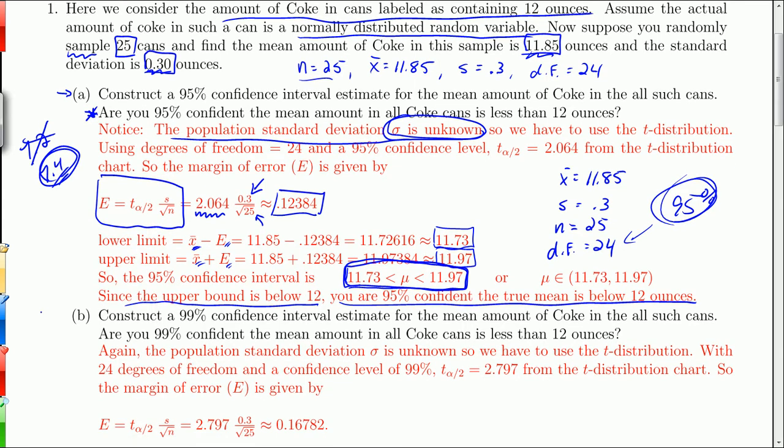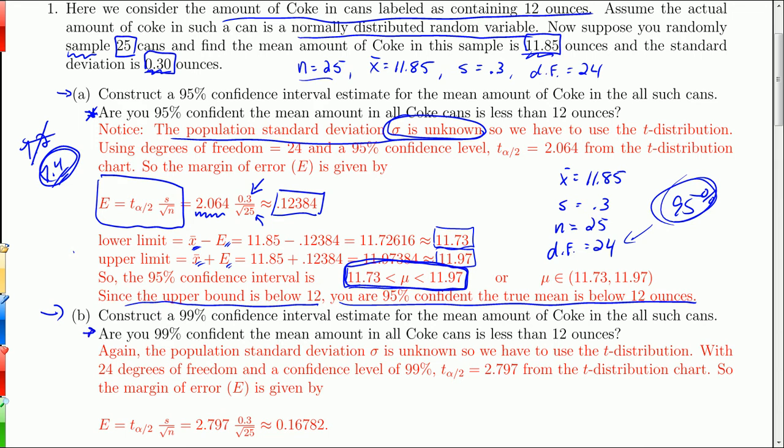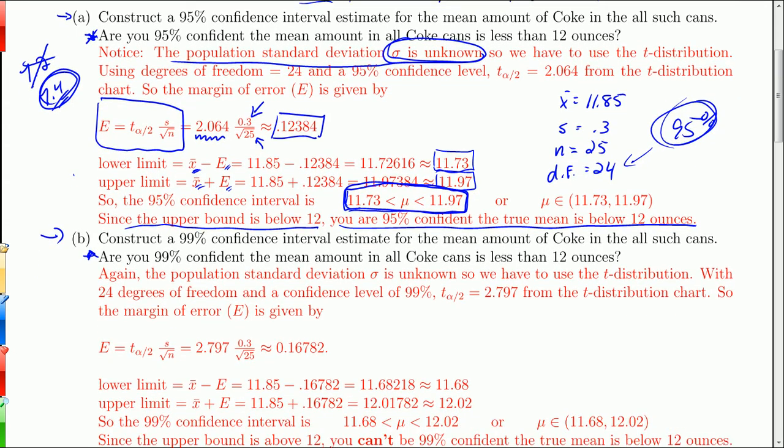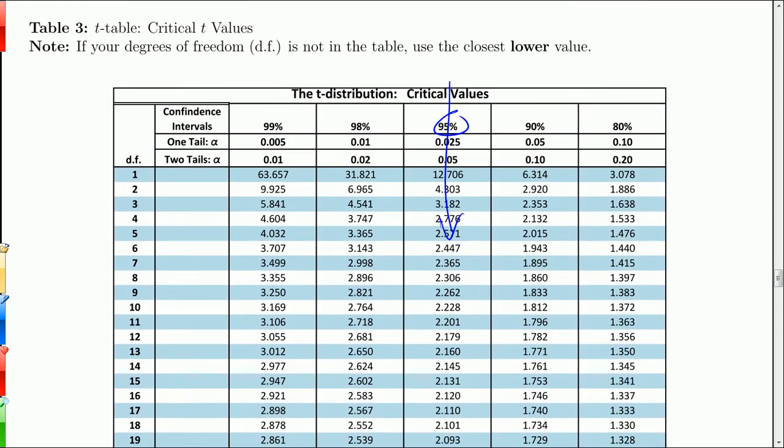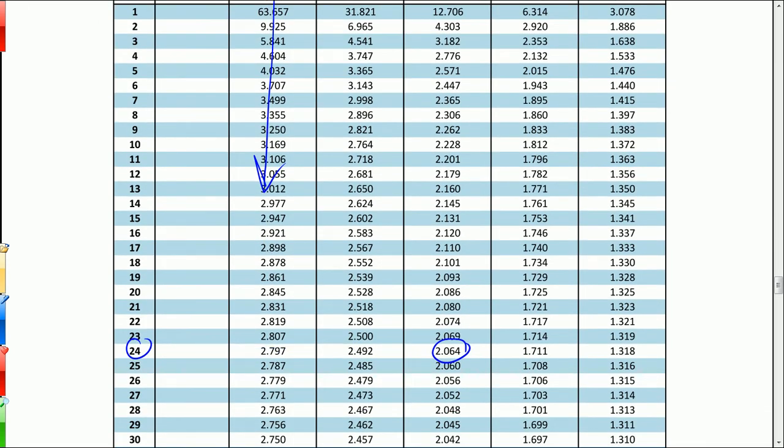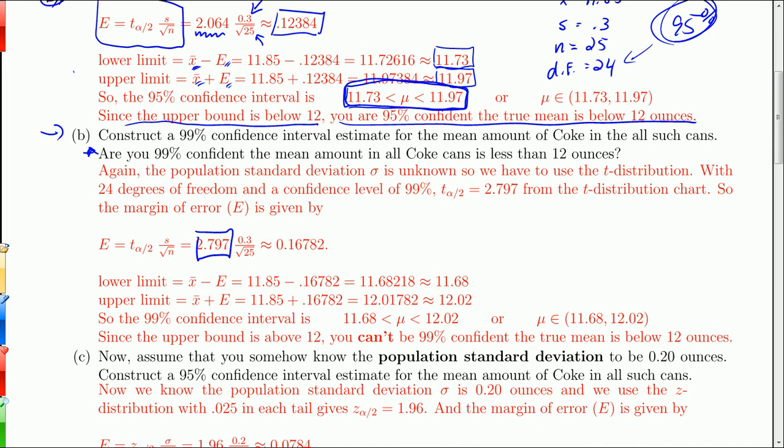Now suppose I want to make a 99% confidence interval and then ask the same question at the 99% confidence level. So the problem remains exactly the same. The only difference is that my critical value of t changes. Basically, I go back to my t table. And now, instead of being at the 95% confidence level, I'm at the 99%. So I'm in this first column. And my critical value goes to 2.797. So let's go back there. So that's where this 2.797 came from.